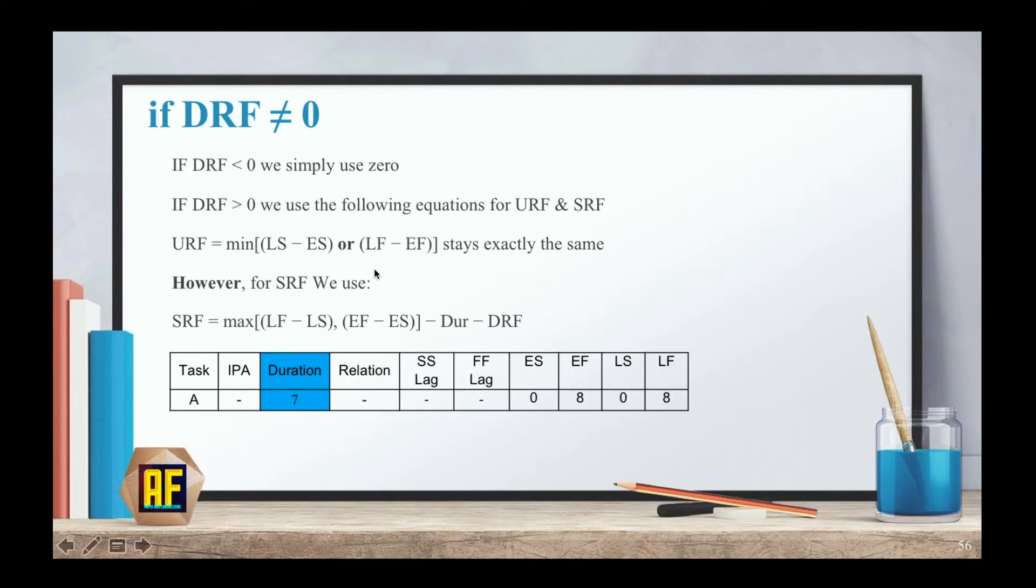I've changed the duration to seven, so we'll get different numbers. Our DRF equals eight minus seven, which equals one, which means that our DRF is bigger than zero. And now we are going to use the same equation for URF. And we need to pick between zero or zero. So we just pick zero.